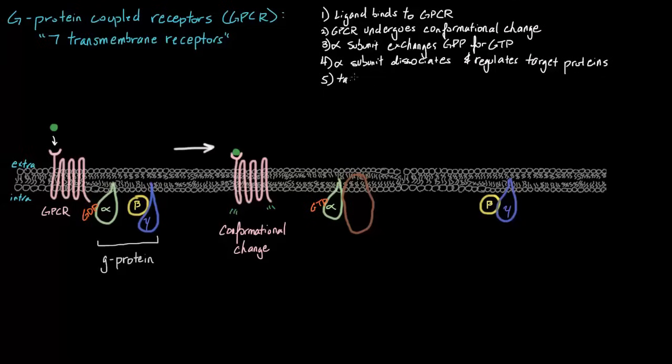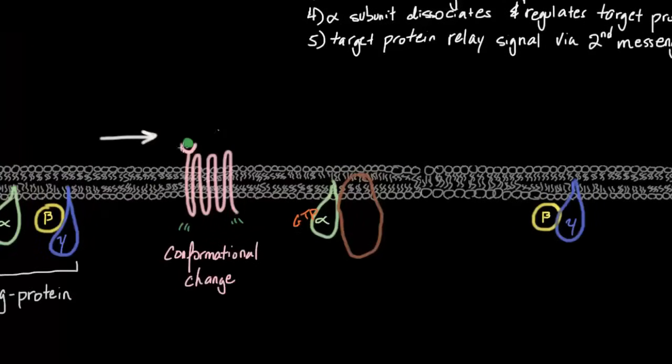Now, step five. Once this alpha subunit activates a target protein, this target protein can then relay a signal. As long as this ligand is bound to the GPCR, this process where our alpha subunit dissociates, looks for a protein, and regulates that target protein, causing a whole chain of events, can happen repeatedly. As long as this ligand is bound.